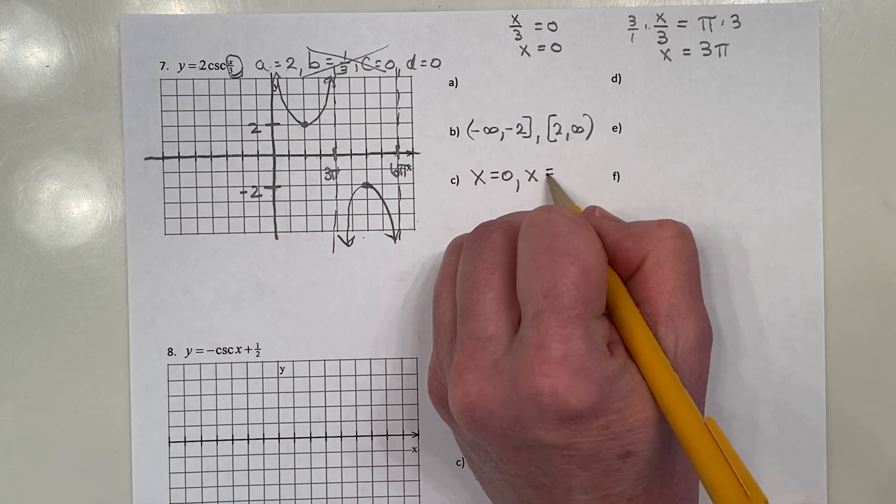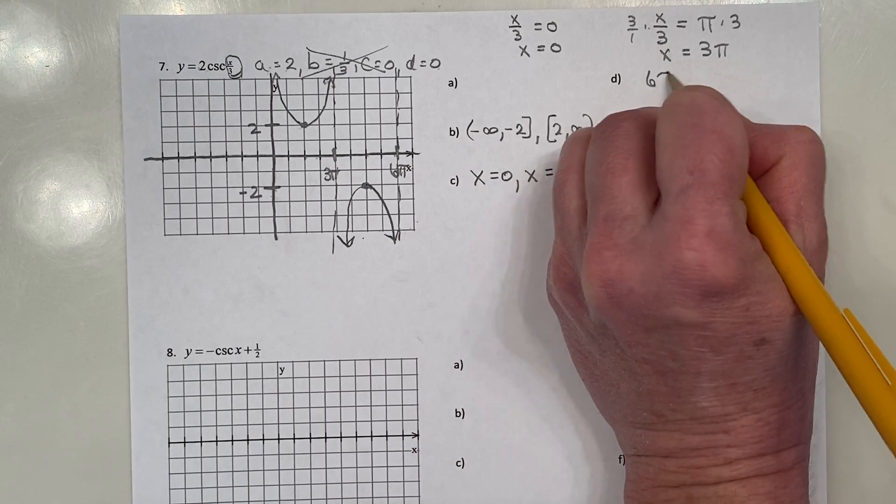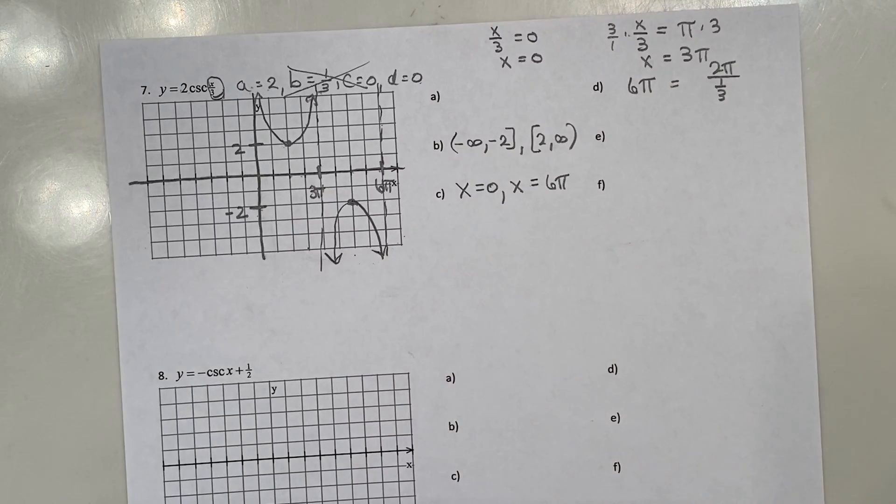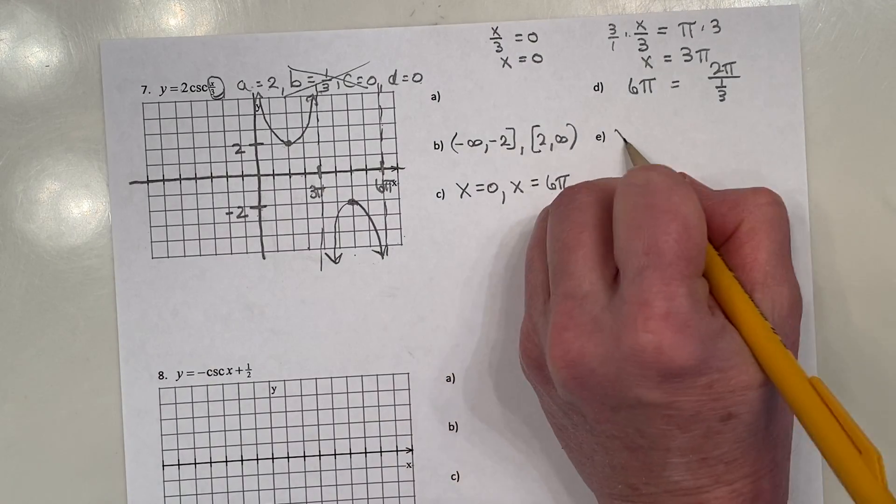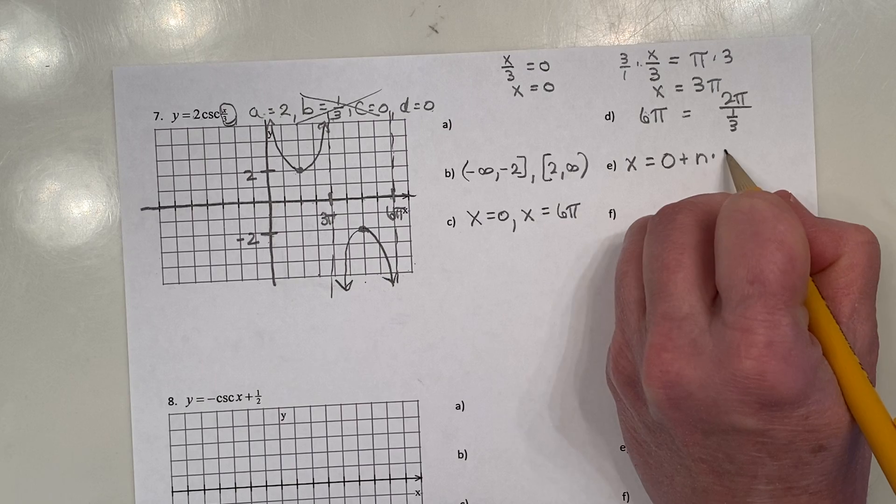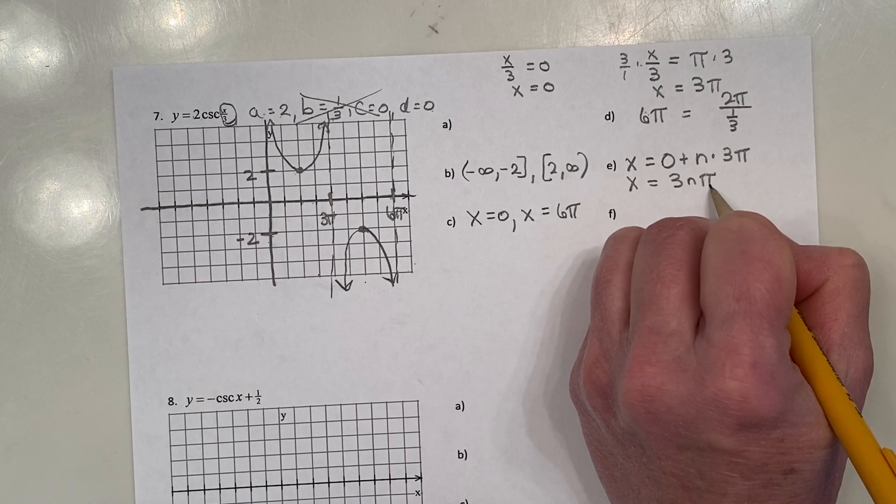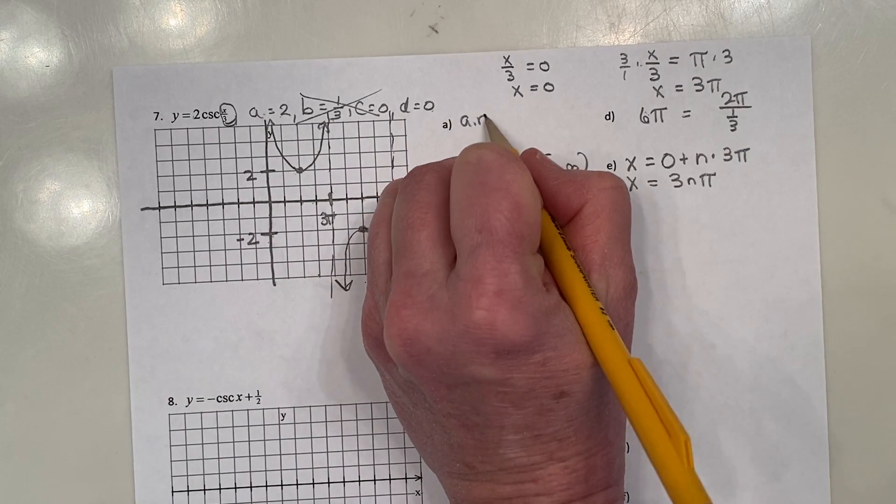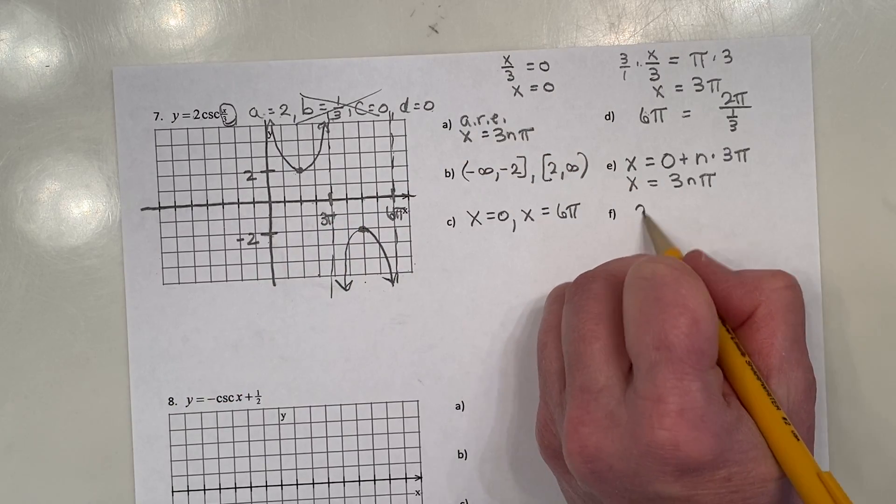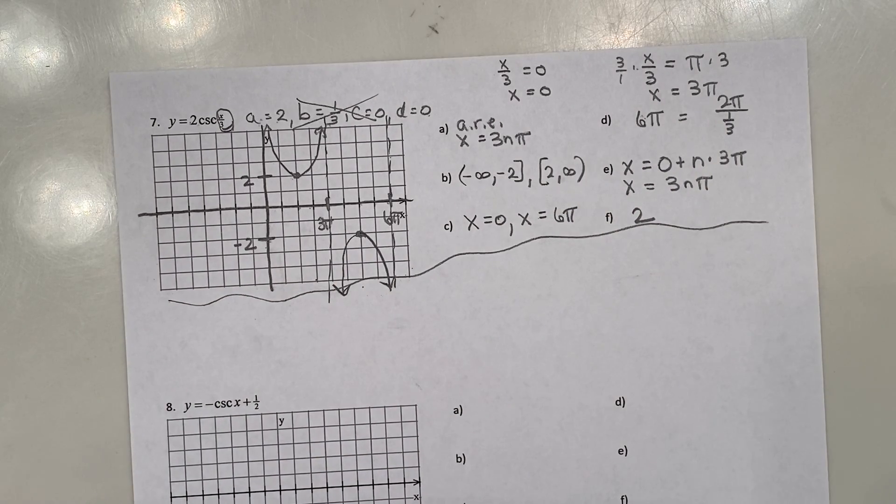Period starts at x equals 0, ends at x equals 6π. That difference is 6π. Is that equal to taking 2π and dividing it by B, which is a third? Yes, it is. Vertical asymptotes start at 0, 0 plus n times half the period. So that's just 3π. That's just 3nπ. So all reals except x equals 3nπ. Makes sense. And the amplitude is 2.